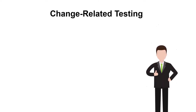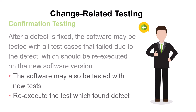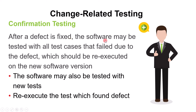Now let's see the technical definition of confirmation testing. After a defect is fixed, the software may be tested with all test cases that failed due to the defect, which should be re-executed on the new software version. The software may also be tested with new tests to re-execute the tests which may find the defect.